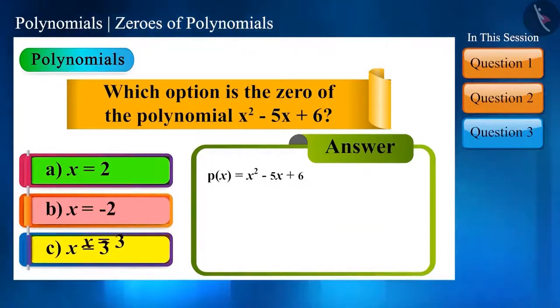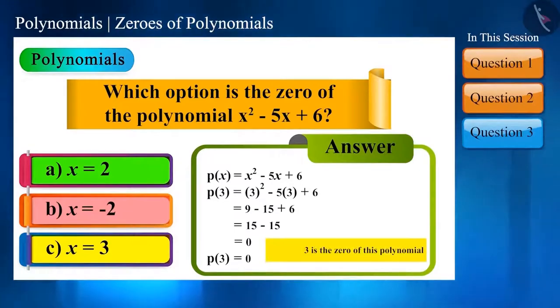And in the last, with x = 3, the value of the polynomial is zero. It means 3 is the zero of this polynomial.